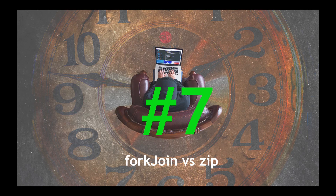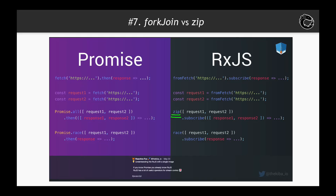Time waster number 7: beware of forkJoin versus zip RxJS operator differences. There is a nice tweet from ReactiveFox — if you know a promise, you already know RxJS. In that tweet, Fox shows you how to make concurrent HTTP requests with observables. In his example, the zip operator is used, but zip has some nuances you should be aware of.